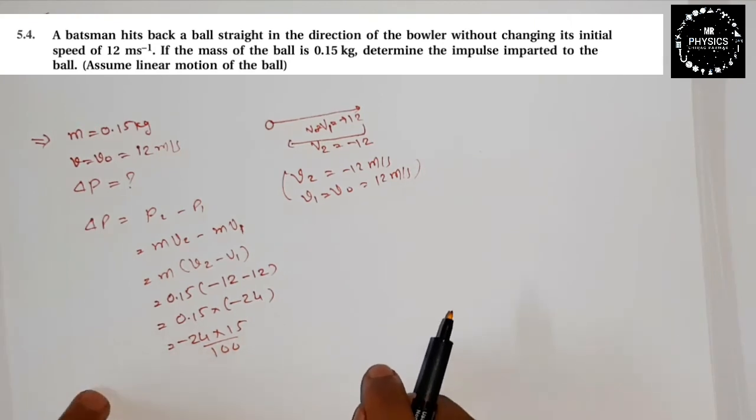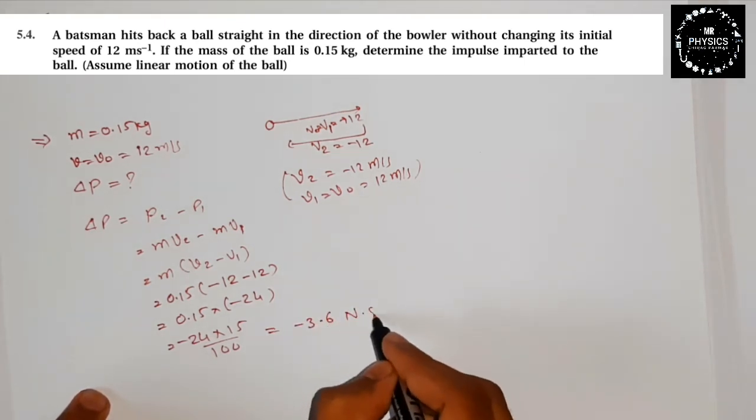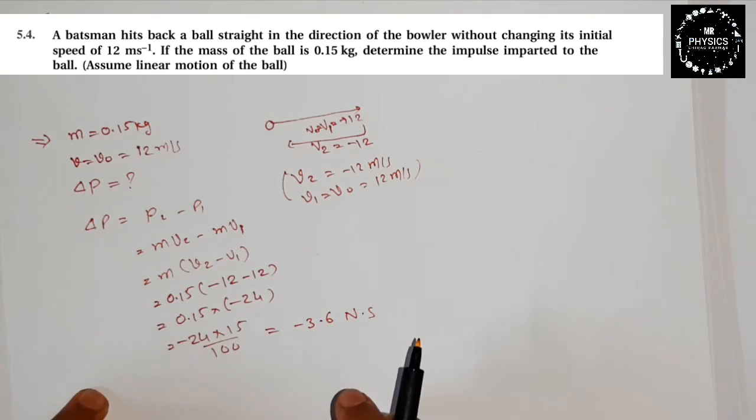I've shown it in simple form. The answer will be approximately minus 3.6 newton seconds. The negative sign shows the direction.